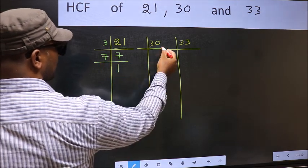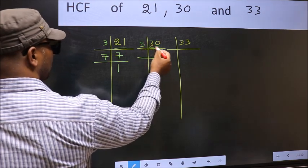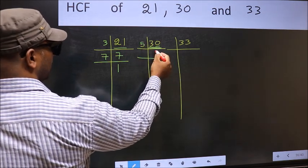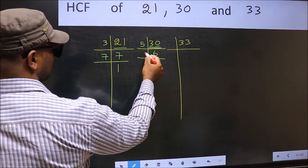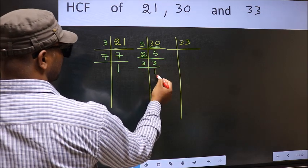Now the other number, 30. Last digit is 0, so take 5. 30 divided by 5 is 6. Now 6 is 2 times 3, and 3 is a prime number.